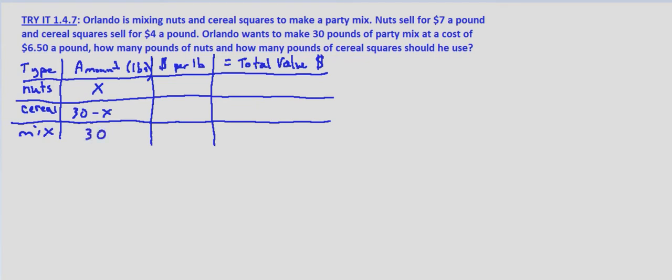Now what's the price per pound in dollars? Well it's $7 per pound for nuts. It's $4 per pound for the cereal squares. And he wants the total cost to be $6.50 per pound.